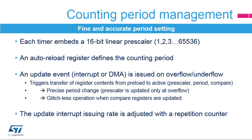This slide explains how to adjust the timer counting period. Each timer embeds a linear clock prescaler, which allows you to divide the clock by any integer between 1 and 65536. This allows the counting pace to be precisely adjusted. For instance, a division by 80 will yield a precise 1 MHz counting rate when the APB clock is 80 MHz.